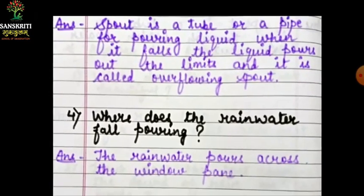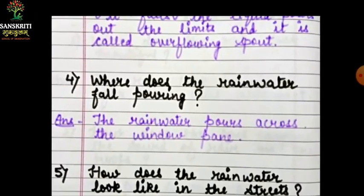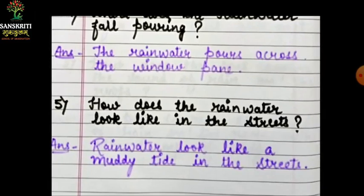Question number four: where does the rain water fall? The rain water falls across the window pane. Joh khidki hai, uske pane par ho raha hai. Question five: how does the rain water look in the street? The rain water looks like a muddy tide in the street. Kaisa lag raha hai — miti se bhar jaata hai na, woh mitti aur paani mix ho jaata hai, toh woh muddy tide jaisa lag raha hai.